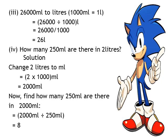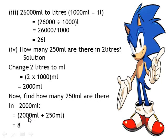Example 4: How many 250 milliliters are there in two liters? We have two different units, so we must convert first. Change two liters to milliliters: 2 times 1,000 gives us 2,000 milliliters. Now find how many 250 milliliters are in 2,000 milliliters: 2,000 divided by 250 gives us 8. So there are eight 250-milliliter portions in two liters.